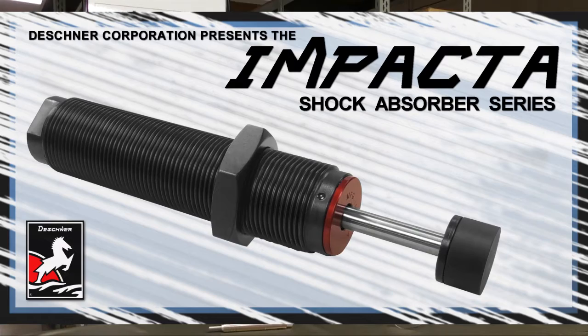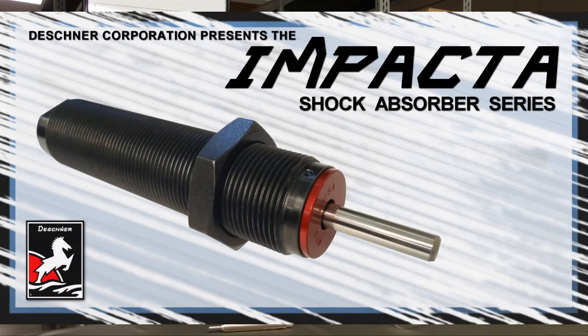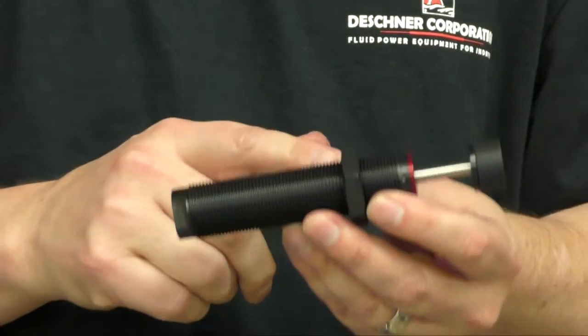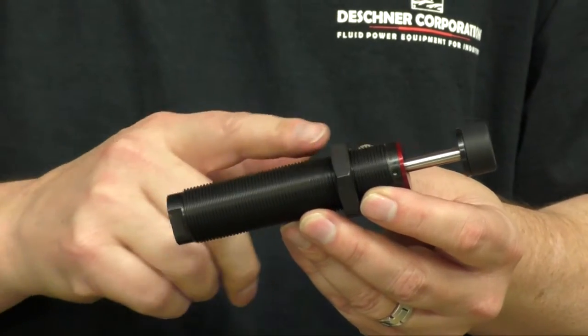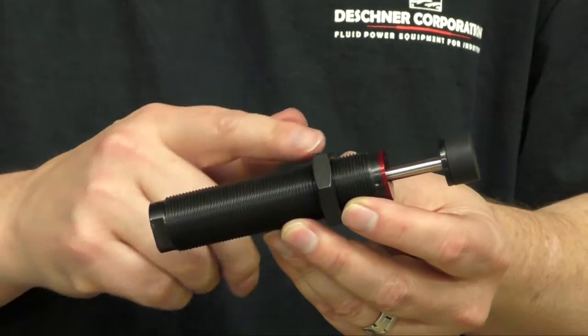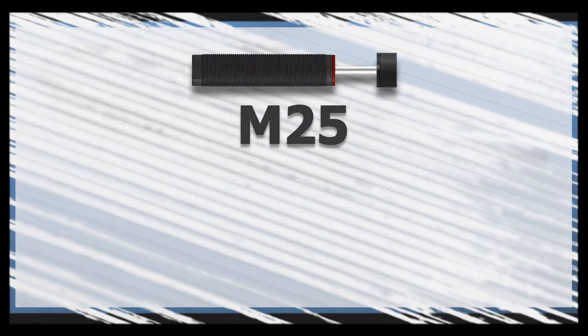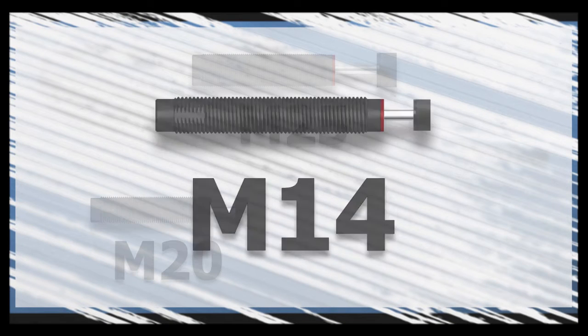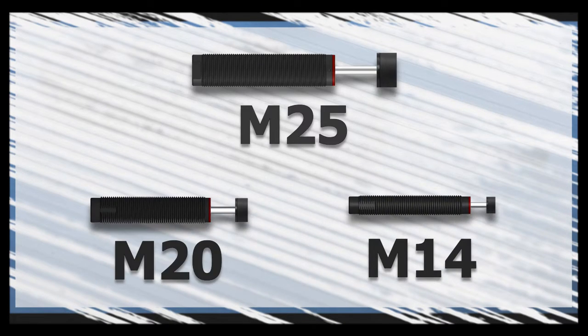It's available with or without an impact bumper. This one's a one inch stroke with an M25 threaded body, which makes it highly interchangeable with today's standard industrial mounting options. The M20 and M14 threaded options will be available shortly.